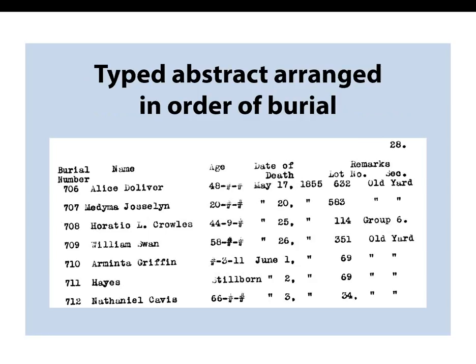Sometimes you get typed abstracts arranged in order of burial. This is a burial number which could have come from a burial record book — burial number 706 in 1855 was for Alice Dolliver. As you can see, the next burials are May 20th, May 25th, May 26th, so they're in order. But if you look on the far right, the lot number and section show they're not all buried side by side. So these are coming from burial records. However, the indication says gravestone inscriptions — these really aren't gravestone inscriptions, but are in fact burial records.